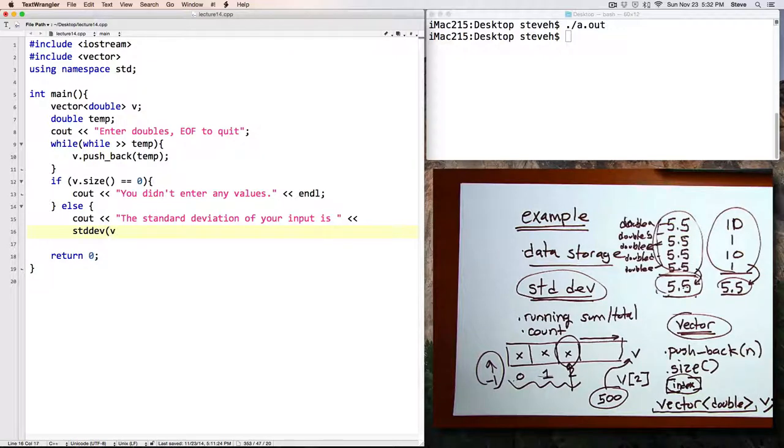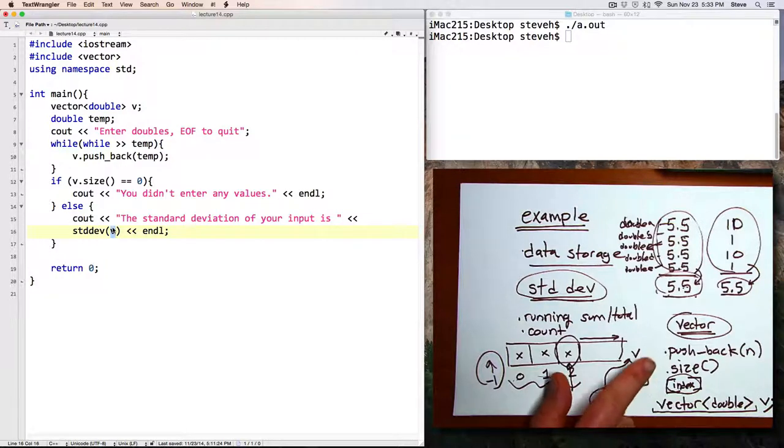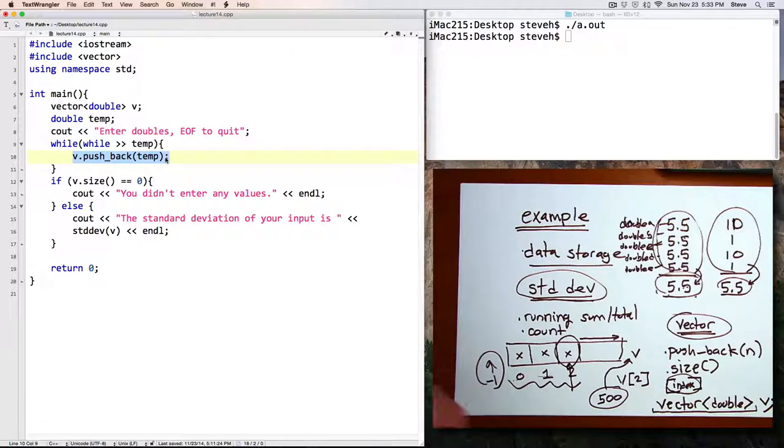When we drop out of this loop, then every double that the user has input will be stored in this vector. Now let's check to see that the person has entered at least one value in it. So here we'll say if v.size is equal to zero, then we'll say 'you didn't enter any values.' Otherwise, 'the standard deviation of your input is...' And let's write a function. And we'll pass it our vector. To pass a vector to another function, you just have to give the name of the vector. That's really convenient.